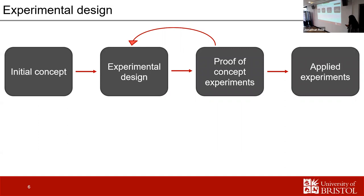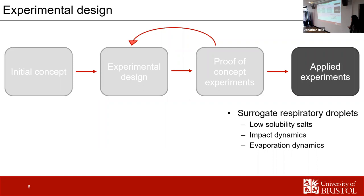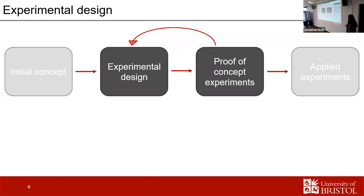In experimental design, you start with the initial concept, then have a preliminary design, test it with proof-of-concept experiments, and iterate in a cyclical process before moving to the end-goal applied experiments. For me, those applied experiments will look at surrogate respiratory droplets, using low-solubility salts found in respiratory fluids, probing the impact and evaporation dynamics. But today I'll focus on some proof-of-concept experiments I have results for — I haven't moved on to that stage yet.